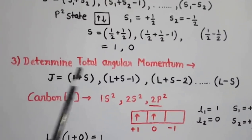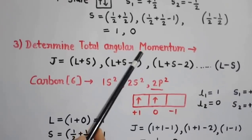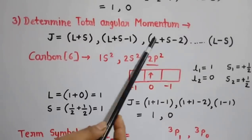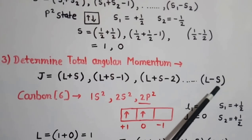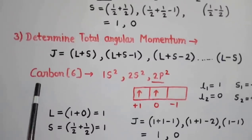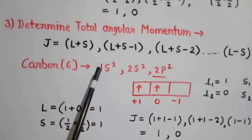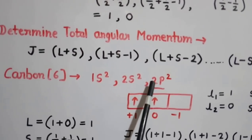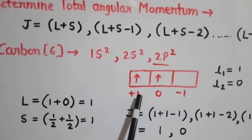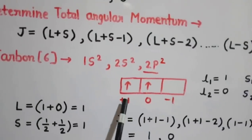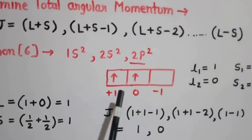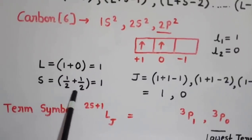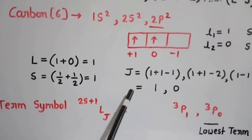The third step is to determine the total angular momentum J by vectorial combination of L and S: J = L+S, L+S−1, L+S−2, down to L−S. For carbon, which has 6 electrons — 2 in 1s, 2 in 2s, and 2 in 2p — the outermost 2p shell has two electrons in px and py orbitals. Their L values are 1 and 0, giving resultant L=1; their S values are +½ and +½, giving resultant S=1. So J takes values 2 and 1... wait — J = 1+1, 1+0, giving J values of 2 and 1 — but from the transcript, J values obtained are 1 and 0.